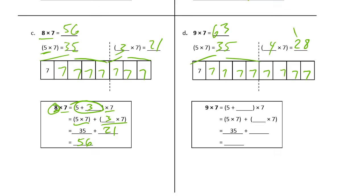The way I do 35 plus 28 in my head is I think of 28 as 25 and 3. Then I have 25 and 35, which is 60, and then three more makes 63. So nine times seven is (five plus four) times seven — the five plus four takes the place of the nine, still times seven. Five sevens plus four sevens: 35 plus 28 equals 63.